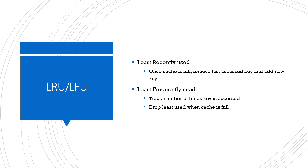LRU and LFU are two other eviction strategies, less about preventing stale data and more about keeping the most requested data in cache. LRU — Least Recently Used — when the cache is full, evicts whatever was accessed least recently since it's being requested less frequently. LFU — Least Frequently Used — tracks the number of times a key has been accessed and evicts whichever key has been accessed the fewest times during a time period. The concept is to keep highly accessed data in cache while it's safer to fetch less requested data from the database.